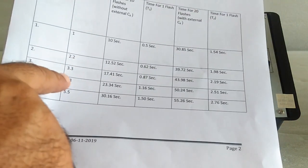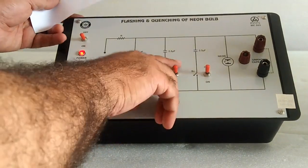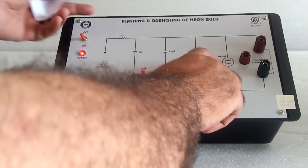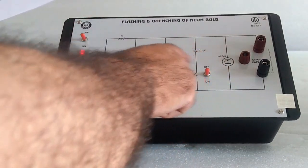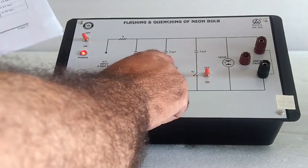Now for 2.2, 3.3, and when we switch on the next capacitance, all are added. And this gives us 5.5 microfarad.